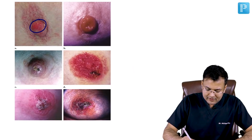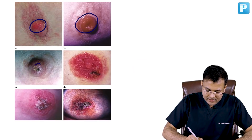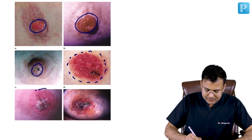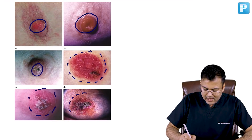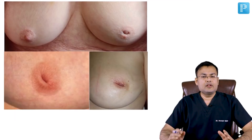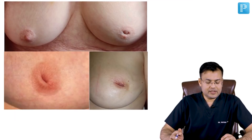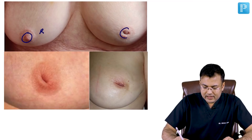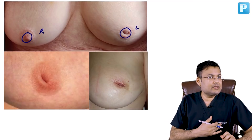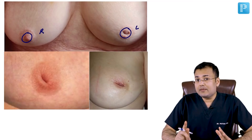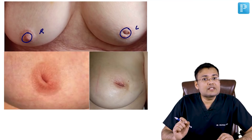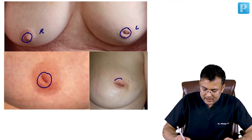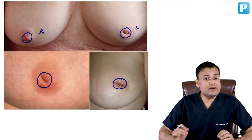So two conditions where lump is not mandatory: one is Paget's disease of the nipple, and second is inflammatory breast cancer. These are various images of Paget's disease of the nipple showing chronic eczematous eruption. In these other images, comparing the right and left nipple, you can see the left nipple is retracted — nipple retraction is a sign of breast cancer.